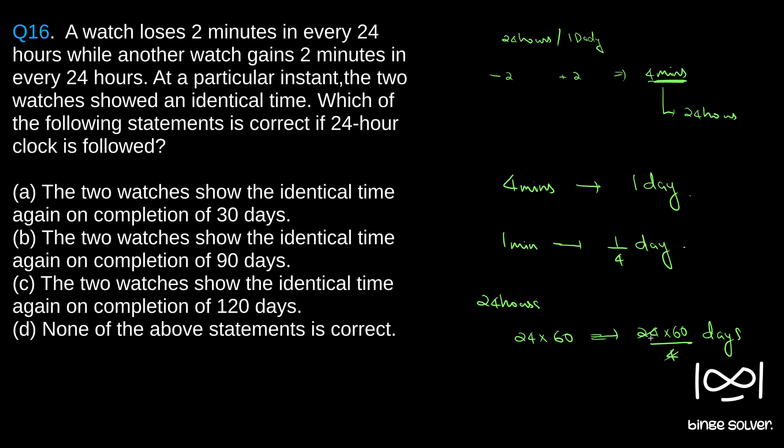If you cancel, four cancels into six, or 360 days. It takes 360 days for the difference to become 24 into 60, or 24 hours, 24 into 60 minutes or 24 hours.